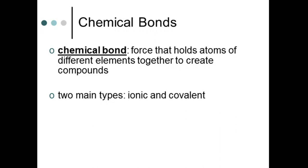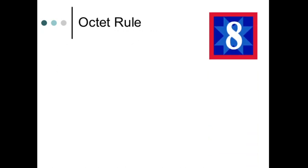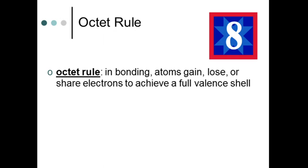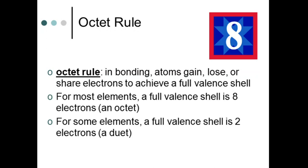Whether you're talking about ionic bonding or covalent bonding, the whole reason why atoms come together to form compounds is all about stability. What makes an atom stable is a full valent shell of electrons — we call this the octet rule. The octet rule states that in bonding, atoms are going to do something with their electrons to achieve a full valent shell. In ionic bonding, it's going to be a gain and loss of electrons to form ions. In covalent bonding, there is going to be a sharing of electrons to achieve a full valent shell.